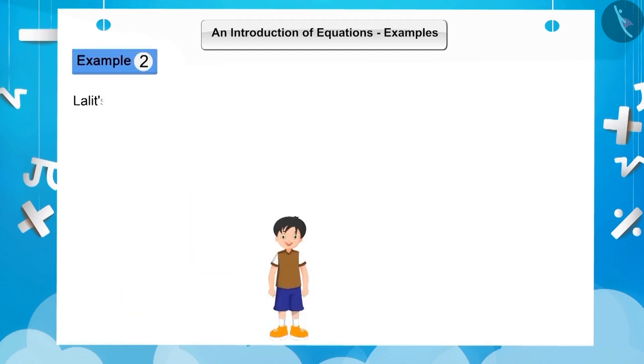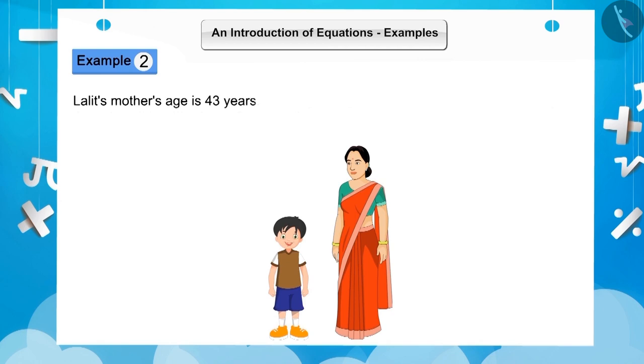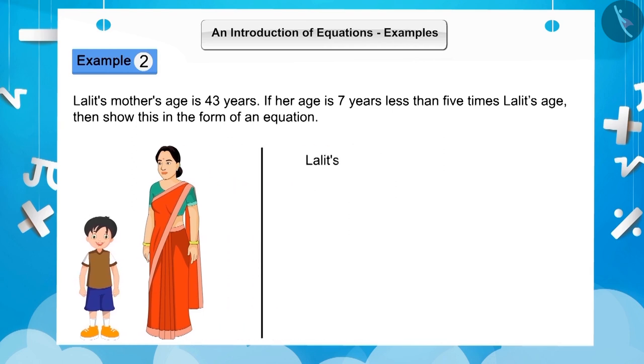Lalit's mother's age is 43 years. If this is 7 years less than 5 times Lalit's age, then show this in the form of an equation. Suppose Lalit's age is a years, then 5 times his age will...